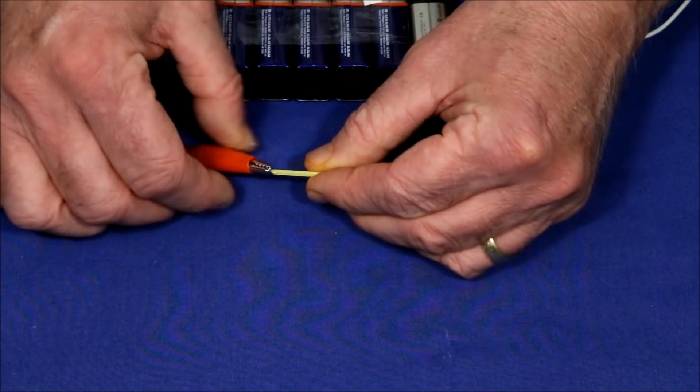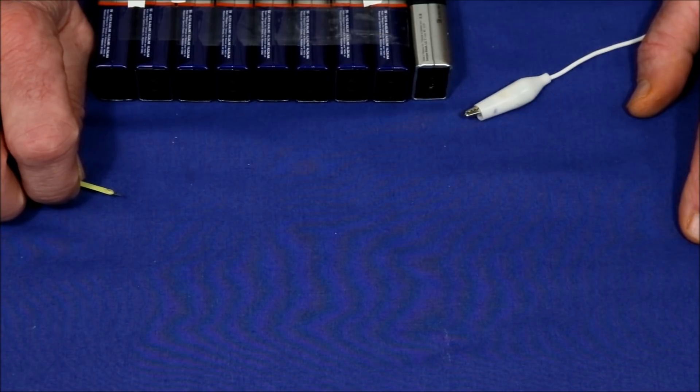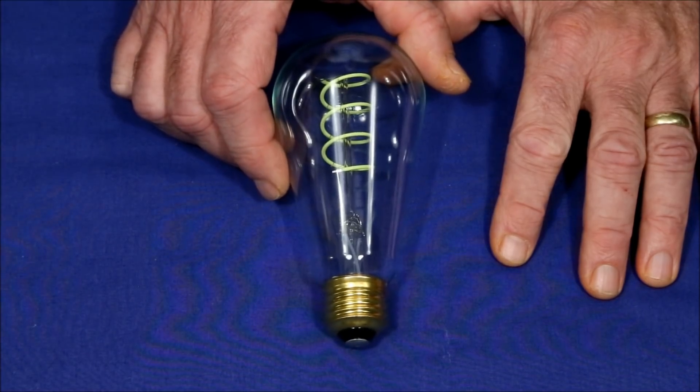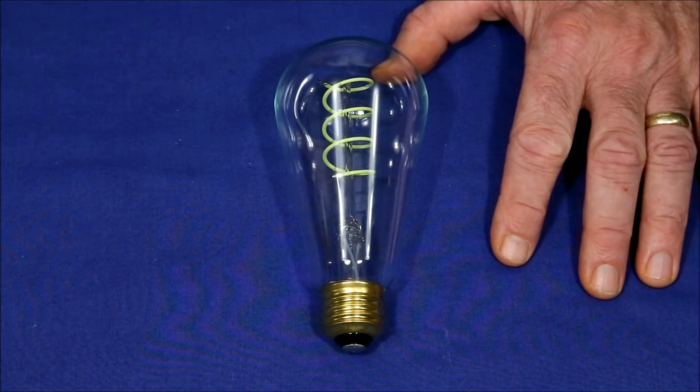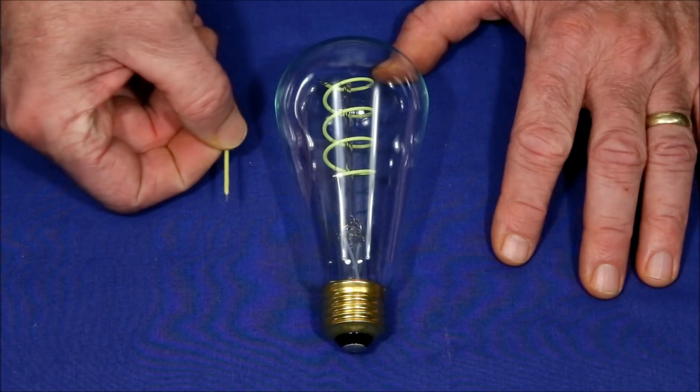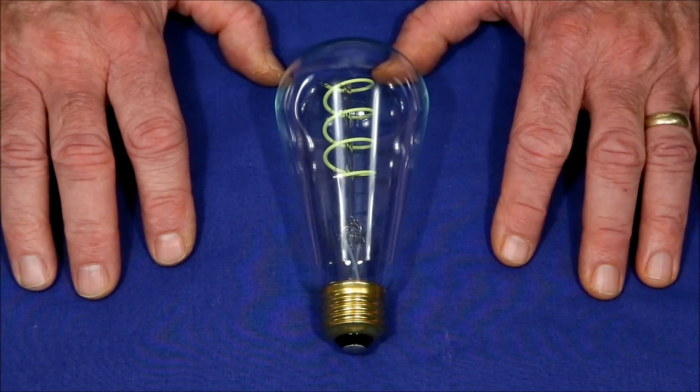Fortunately, there's an alternative which is much more durable and much more flexible. Let me show you what it is. This is a flexible filament LED bulb. Instead of several short, stiff LED elements like this, it has a single flexible filament which can be wound in a spiral or any other shape that they want.